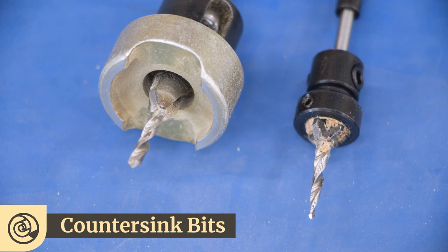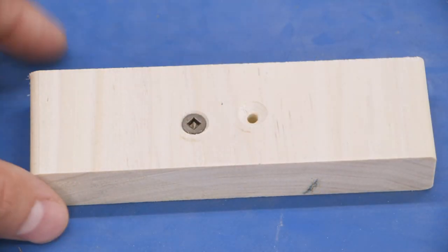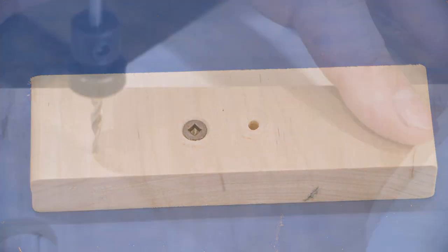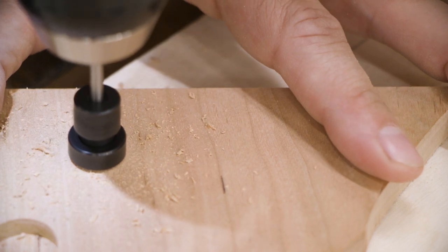Lastly, we have countersink bits. So these are specific drill devices that not only drill a pilot hole, but also result in a countersunk section of the hole that allows the head of a screw to go either flush or below the surface. So very handy if you're driving screws into a project. They come in all different shapes and sizes.